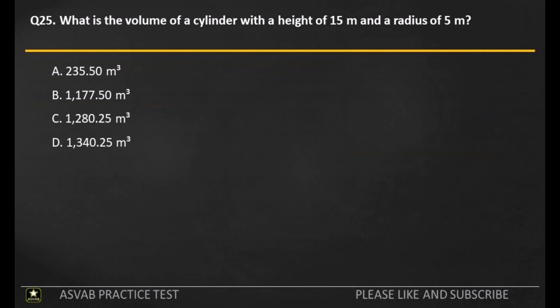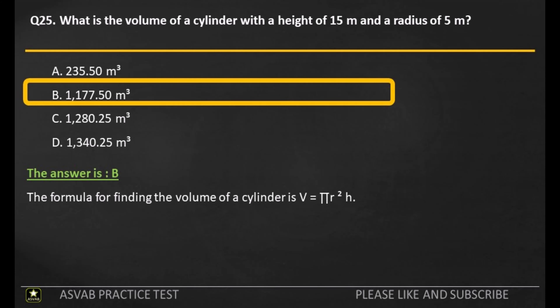Q25. What is the volume of a cylinder with a height of 15 meters and a radius of 5 meters? A: 235.50 cubic meters. B: 1,177.50 cubic meters. C: 1,280.25 cubic meters. D: 1,340.25 cubic meters. The answer is B. The formula for finding the volume of a cylinder is V equals pi R squared H.